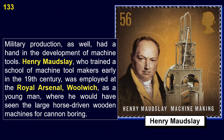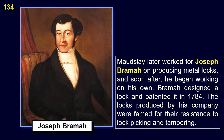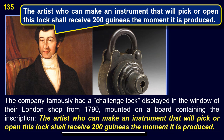Military production was also an important factor in the development of machine tools. Henry Maudsley, who trained a school of machine tool makers early in the 19th century, was employed at the Royal Arsenal at Woolwich as a young man, where he would have seen the large horse-driven wood and metal machines for cannon boring. Maudsley later worked for Joseph Bramah on producing metal locks. Bramah designed a lock and patented it in 1784. The locks produced by his company were famed for their resistance to lock picking and tampering. The company famously had a challenge lock displayed in the window of their London shop from 1790, with the inscription: 'The artist who can make an instrument that will pick or open this lock shall receive 200 guineas the moment it is produced.'